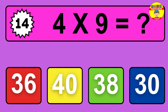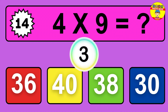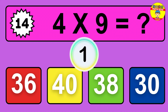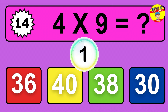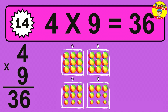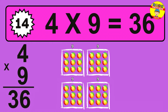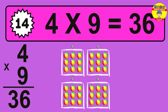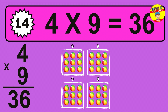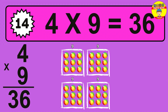Question 14. 4 times 9 equals what? The answer is 4 times 9 is 36. To calculate, we have 4 groups with 9 balls each one. So, how many balls do we have? 36 balls.